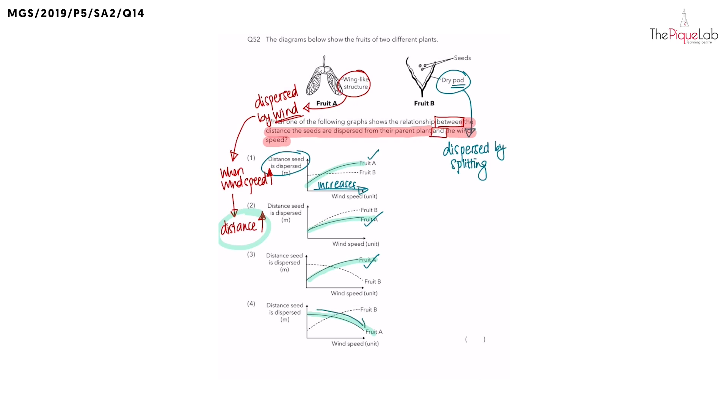How about number four? Is it increasing? No, it shows that when the wind speed increases, the distance the seed dispersed decreased. So option four is wrong. So we are left with the first three options.